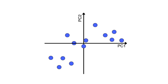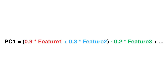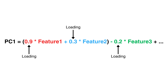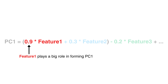An important thing to realize is that the principal components don't usually have a clear intuitive meaning at first, because each one is a linear combination of your original features — they're made by mixing together the original variables in specific proportions to create a new axis. These proportions, the weights assigned to each original feature in forming a principal component, are called loadings. Think of loadings as telling you how much of each original feature contributes to a given principal component.